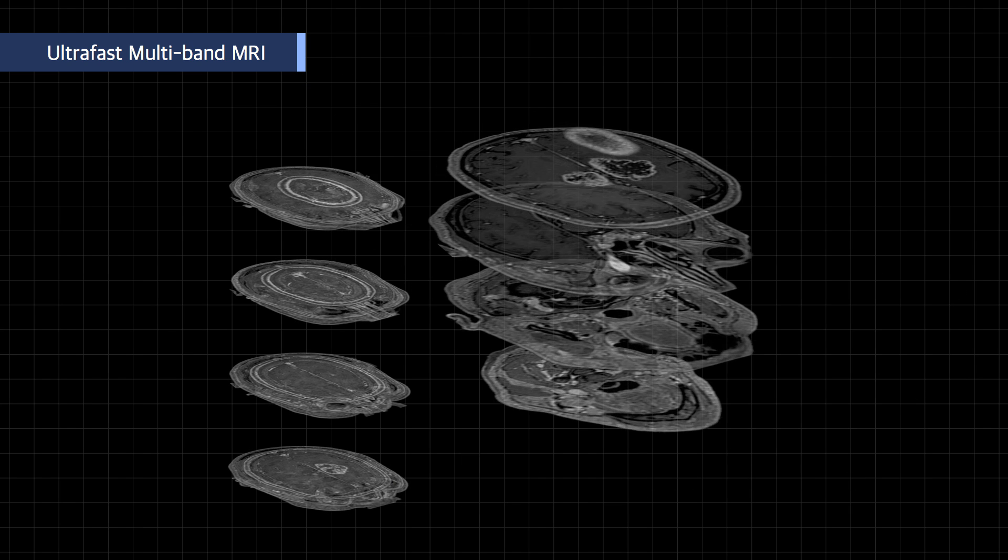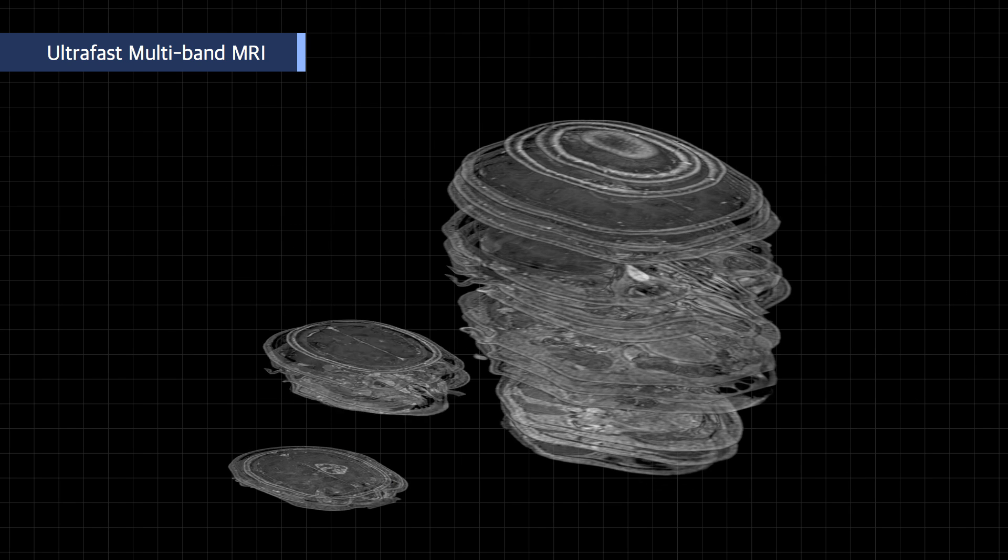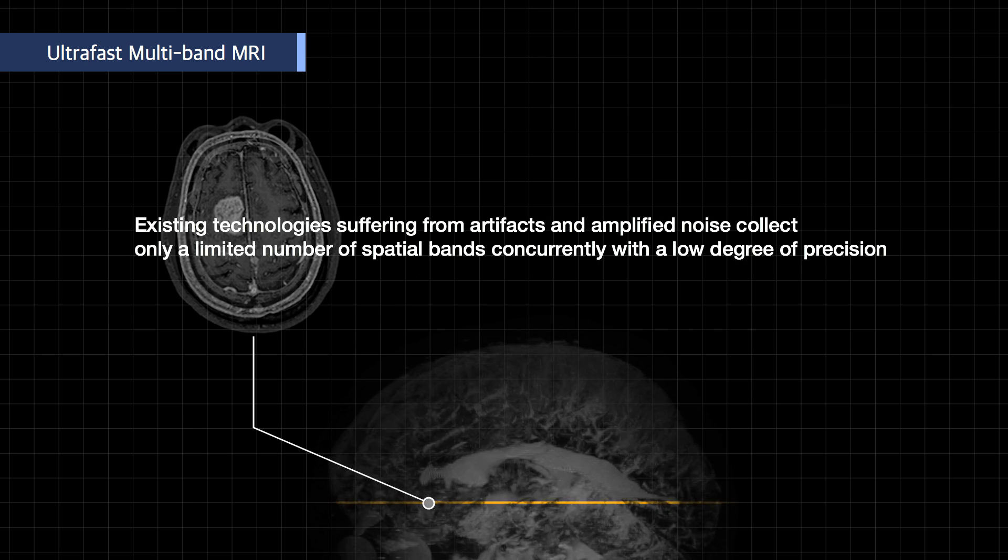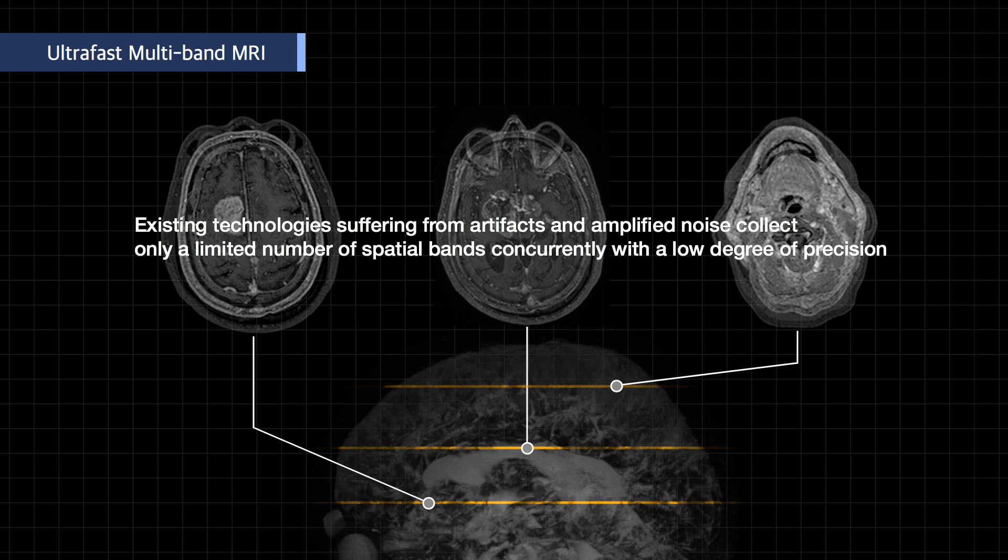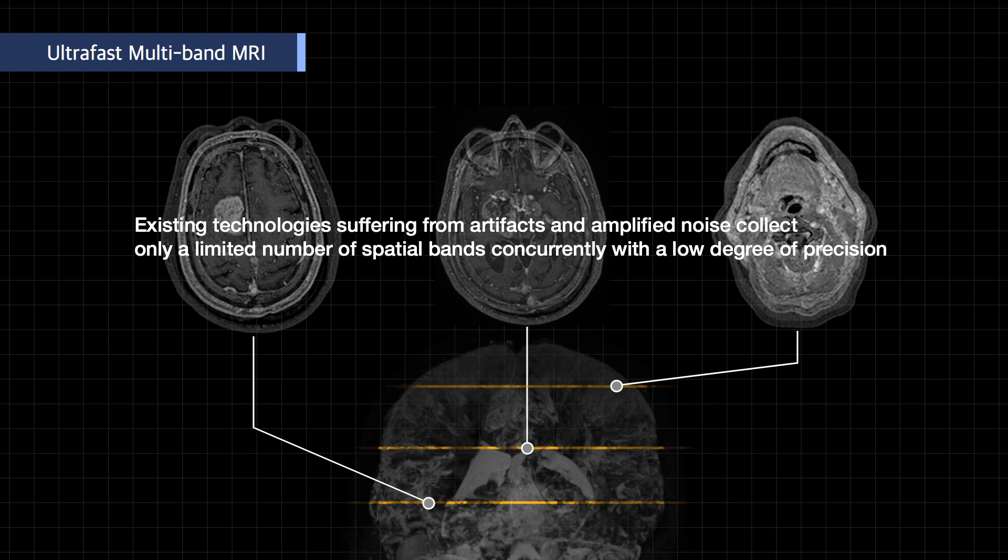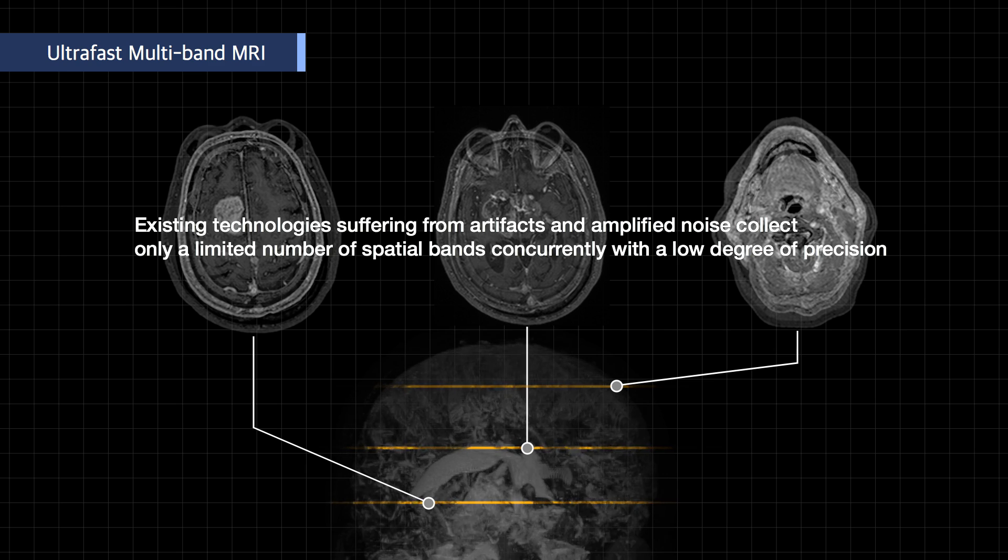The more spatial bands you acquire simultaneously, the faster inspection you will realize. As existing technologies suffer from artifacts and amplified noise, the number of spatial bands they can collect at the same time was very limited with a low degree of precision.